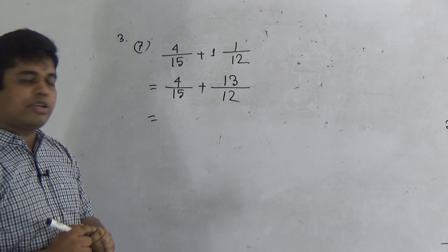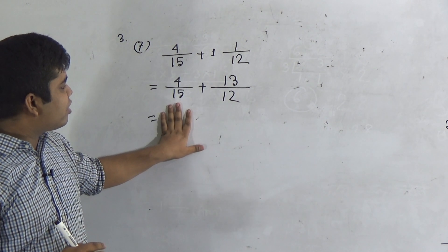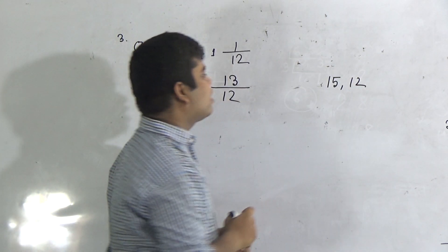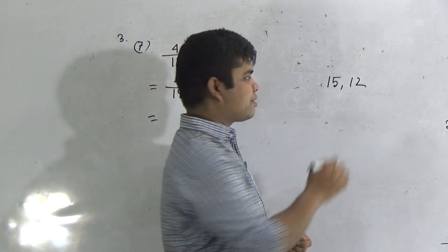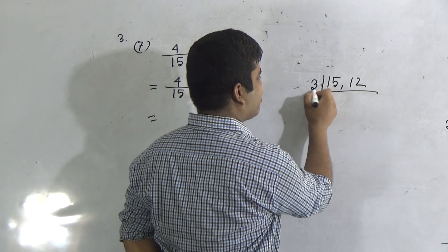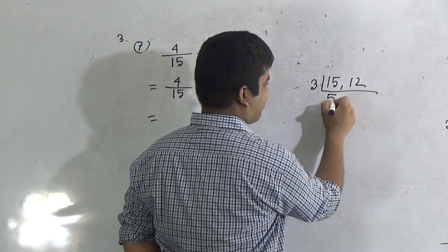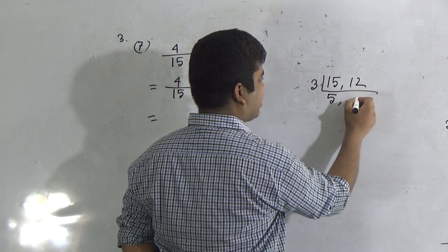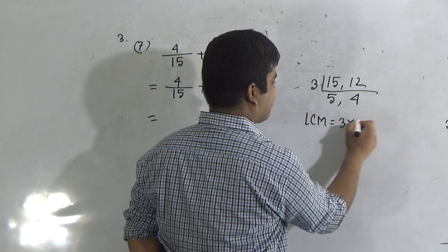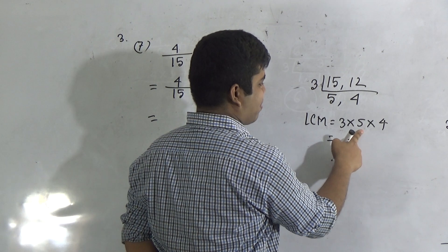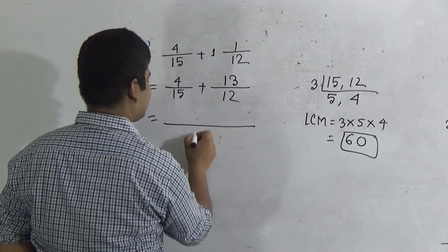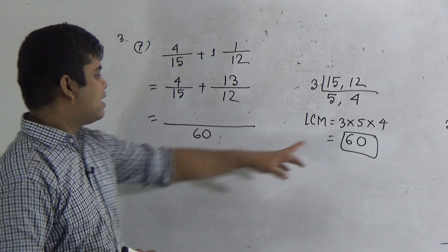Now we take the denominators of the two fractions: 15 and 12. We find out the LCM of 15 and 12. Notice both numbers are divisible by the prime number 3. If we divide 15 by 3 we get 5; if we divide 12 by 3 we get 4. So LCM equals 3 times 5 times 4. 3 fives are 15, and 15 fours are 60. So 60 is the LCM, and we write 60 as the denominator.